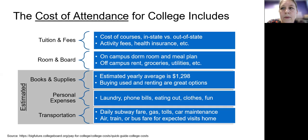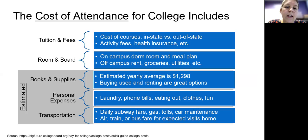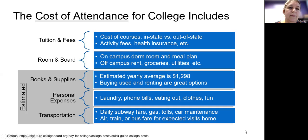Transportation will also be included in these estimated costs of attendance, and it will depend on how close you are to home. If they decide to include airfare for people traveling out of state or far away, or they might include gas, tolls, and regular costs for commuters. So you can expect to see tuition and fees and room and board on your bill, but your financial aid package will also include these other estimated costs that the average student spends every year.